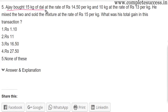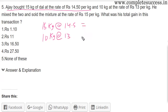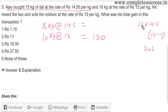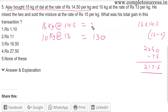Ajay bought 15 kg of dal at the rate of Rs.14.5 per kg and 10 kg of dal at the rate of Rs.13 per kg. The cost of 10 kg is Rs.130. For 15 kg: 15 into 14.5 equals 15 into 15 minus 15 into 0.5, that is 225 minus 7.5 equals Rs.217.5. So the total cost price is Rs.347.5 for 25 kg.